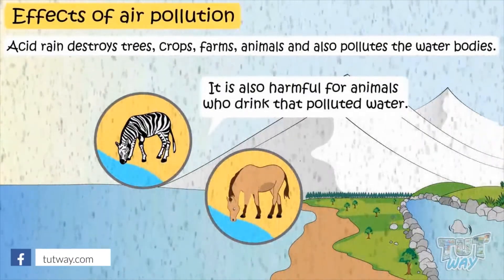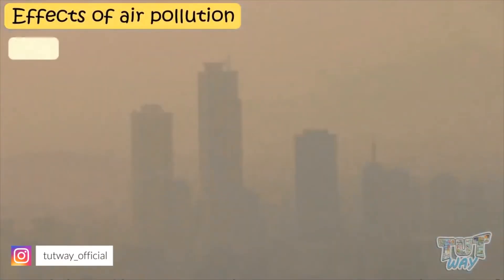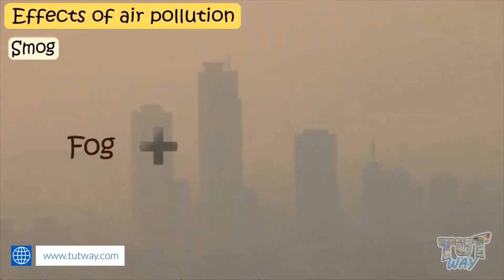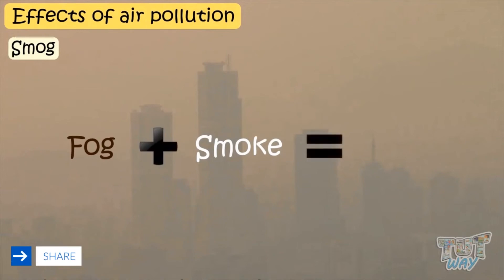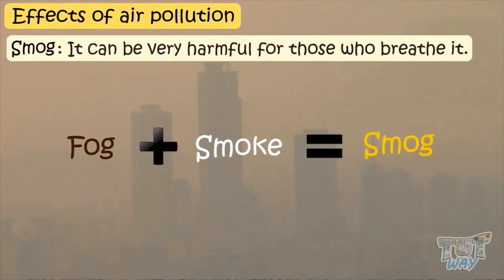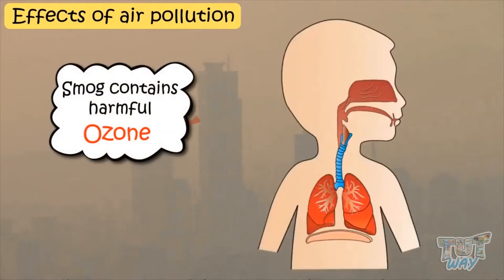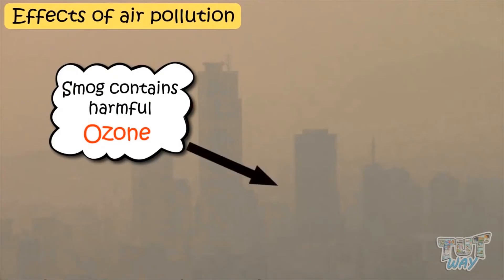Another important effect of pollution is smog. It is formed when fog is mixed with smoke, and a poisonous form of fog is formed, which we call smog. It can be very harmful to breathe in too much smog, as it contains a pollutant called ozone — a gas that is very harmful for our lungs. Smog also reduces visibility.